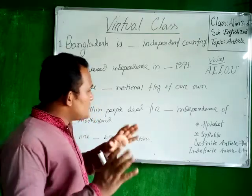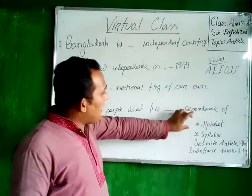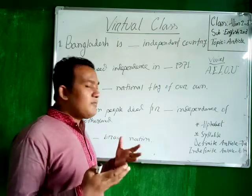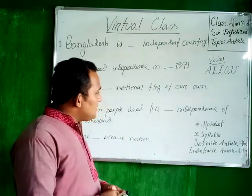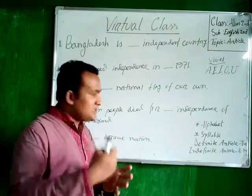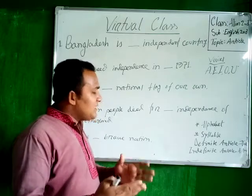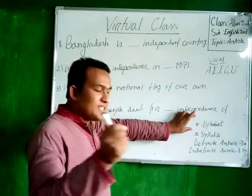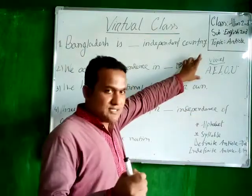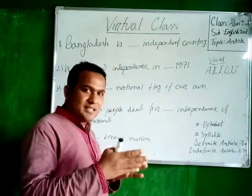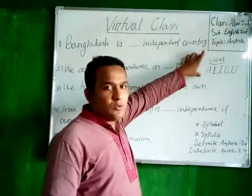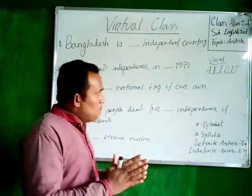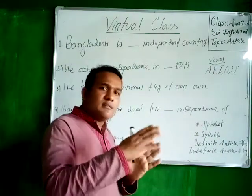First, I have to explain the alphabet. What is the alphabet? The alphabet consists of letters. In the English alphabet, there are 26 letters. Among these 26 letters, five letters are vowels. What are they? A, E, I, O, U — they are vowels. The other letters are consonants.